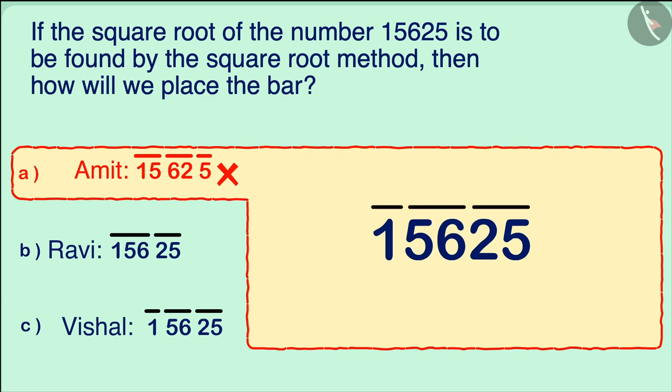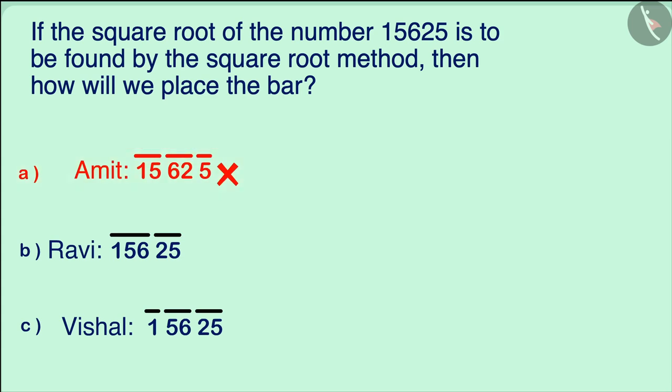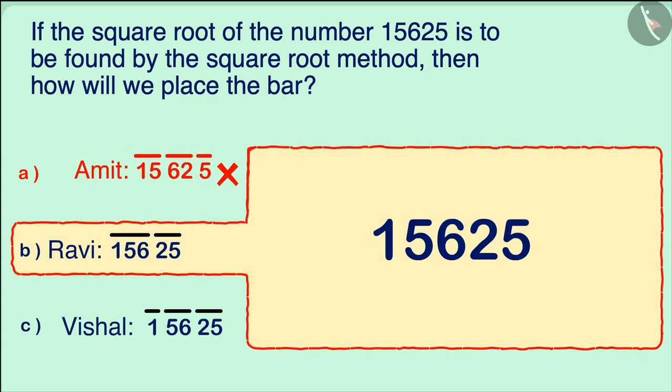In the second option, Ravi started right. He started from the units place, that is from the right, and then moved the bar to the left. But he has made a triplet of numbers here, which is wrong, because we have to make only pairs of numbers.